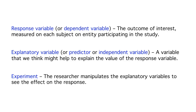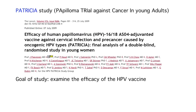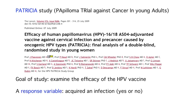An example of an experiment that we've already seen is the PATRICIA study to examine the efficacy of a vaccine at preventing infections with HPV. In the PATRICIA study, we were interested in whether or not the subject acquired an infection, so that is our response variable.